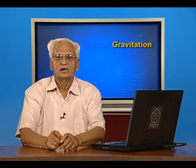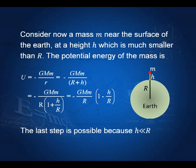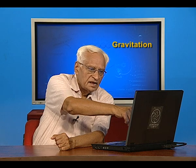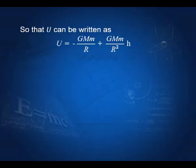Now suppose we go to a height h from the surface. Then we can write the gravitational potential energy u equal to minus GM by r, where r is now capital R plus h. We take capital R outside, giving R into 1 plus h by R, and this becomes minus GM by R into 1 minus h by R, using the binomial theorem and the fact that h is small compared with the radius of the earth.